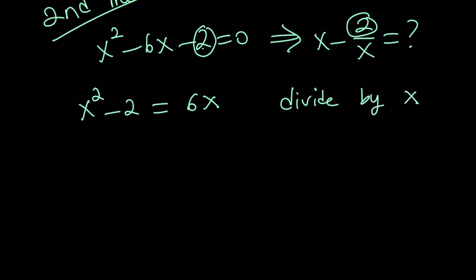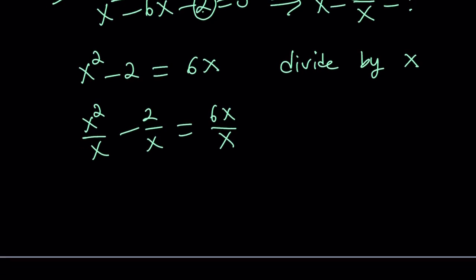And guess what that's going to do? This is going to actually do miracles, because when you do that, you're going to get the answer right away. Notice that x squared divided by x is x minus 2 over x. x does not equal 0. We know that. And we get the answer right away. x minus 2 over x equals 6.